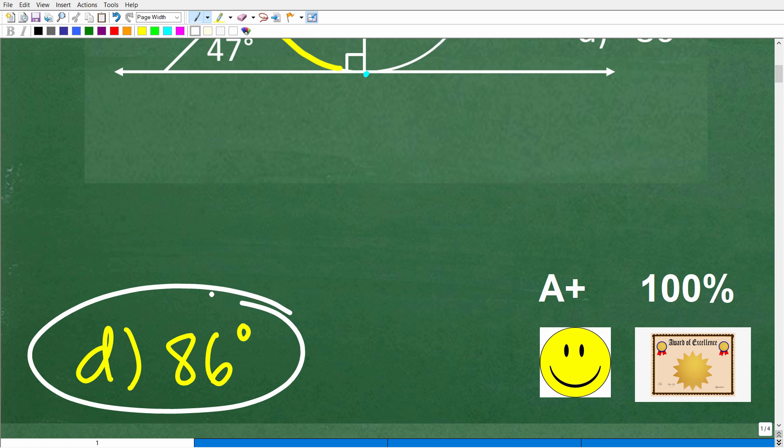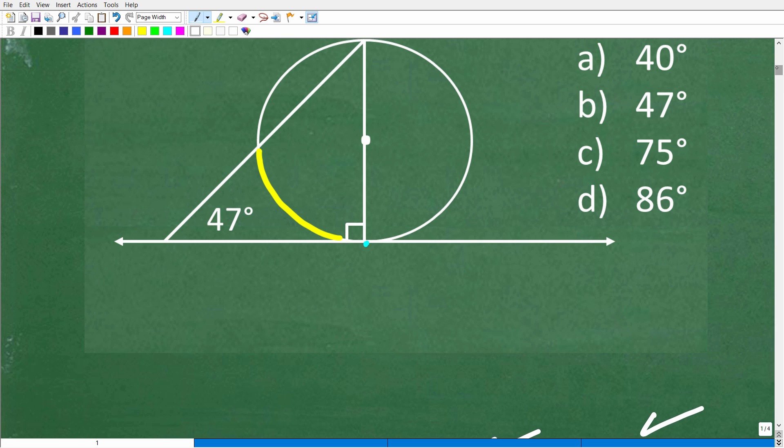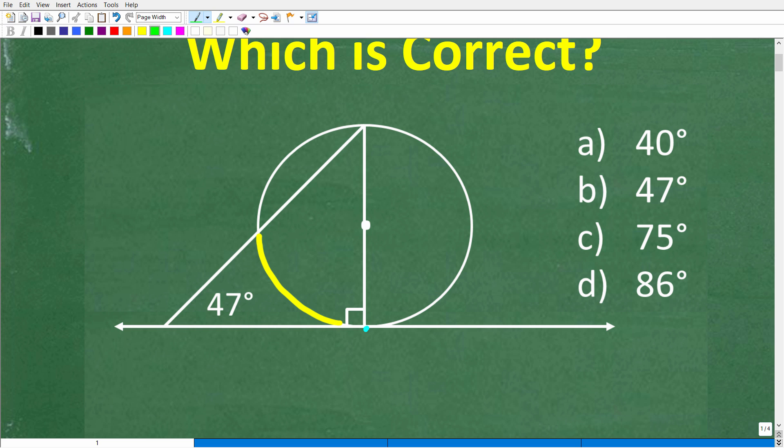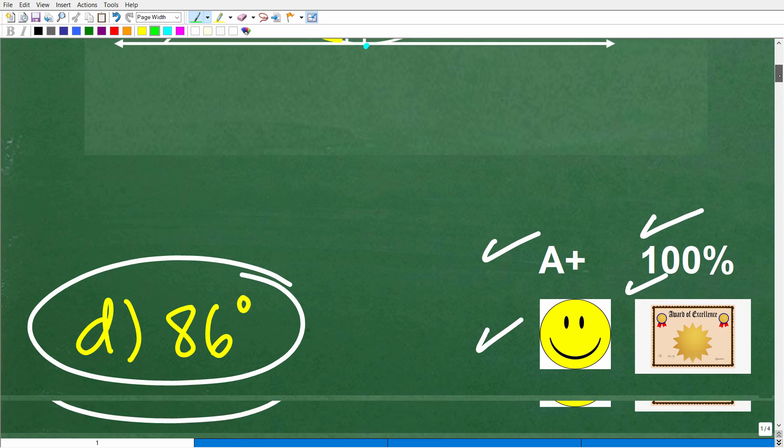All right, now, if you got this right, you definitely get a happy face, an A+, and 100%, and a Certificate of Excellence for being a certified professional expert in the area of inscribed angles. Okay, so we have an inscribed angle inside of a circle. And really, the key to figuring this problem out is to really kind of take a closer look at this angle, which obviously connects to this arc right there.